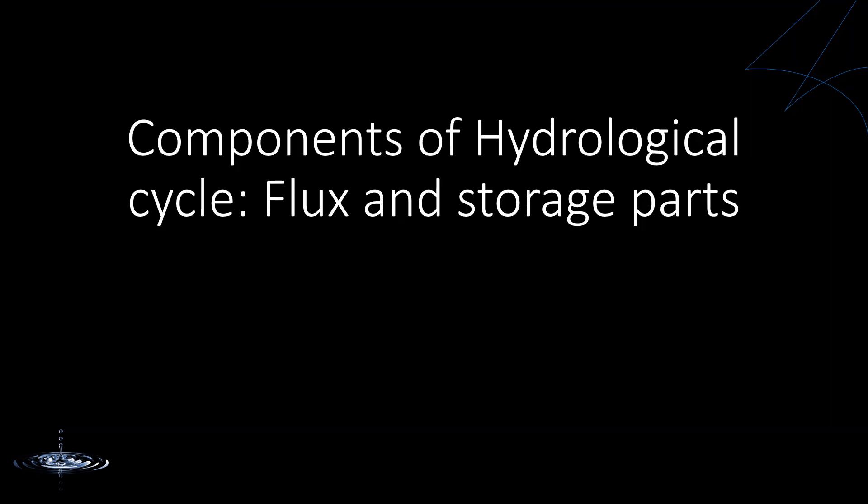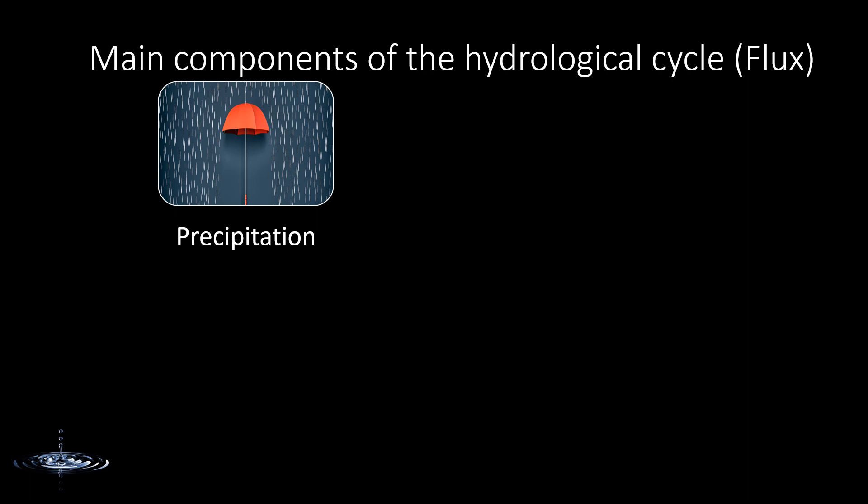Let's talk about the components of the hydrological cycle — flux and storage. First, precipitation. Precipitation is a vital component of the hydrological cycle, responsible for the continuous movement and distribution of water in Earth's ecosystem. It refers to the process by which atmospheric water vapor condenses and falls to the Earth's surface in the form of snow, rain, sleet, hail, and other forms of moisture.